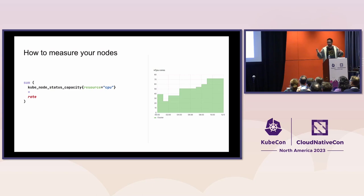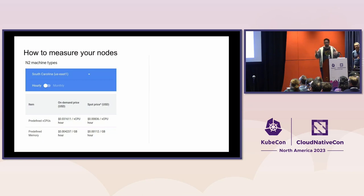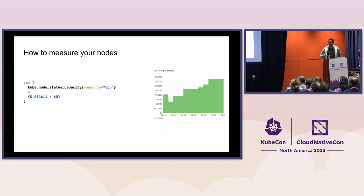Now that we know the number of cores in a cluster, we can figure out what it costs to run that cluster. We're going to cheat a little for rate: we go to the cloud provider, and the three things you care about for CPU cost are the region, the instance type, and whether it's on-demand or spot. In this example, we'll use the on-demand price — approximately three cents per hour per vCPU — and plug that into rate. Charted, that gives us how much we're spending per minute.